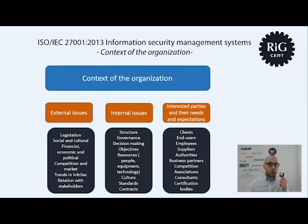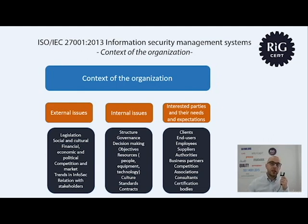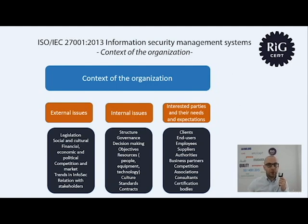Internal issues also include resources in terms of people, equipment, technology, culture, standards applicable inside the organization, and contracts that the organization has signed. This requirement makes the organization aware of the realities outside and inside, giving it a clear image of where it is positioned — which is why the standard asks for identification of external and internal issues.